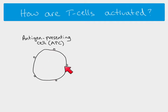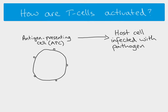Antigen presenting cells, or APCs, are part of the host - a person's own cells. On the outside of the APC, you can see antigens. There are two possibilities: the APC could be a host cell that has already been infected by a pathogen, such as bacterial cells inside the host cell. As part of the cell's response to that infection, it is able to present the antigens from that pathogen on the outside - it's a kind of help signal.